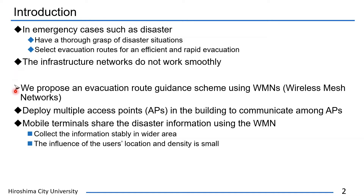In this research, we propose an evacuation route guidance scheme using wireless mesh networks to address the disaster situation. A wireless mesh network is one kind of wireless multi-hop networks. We deploy multiple access points in the building to communicate among APs, and the mesh network is configured by APs.